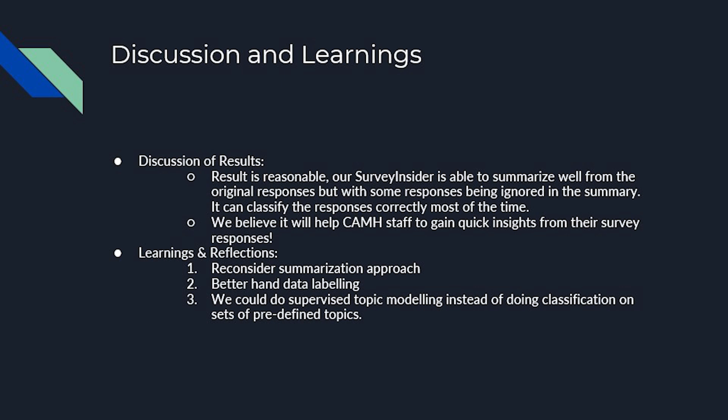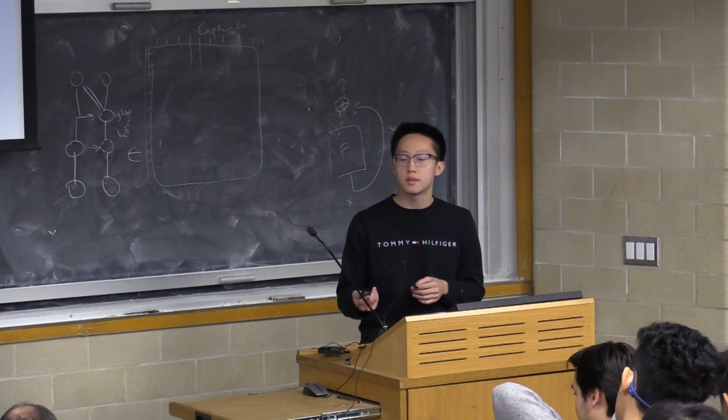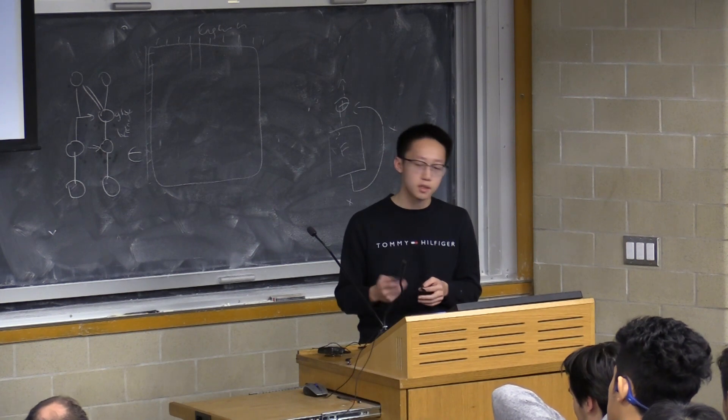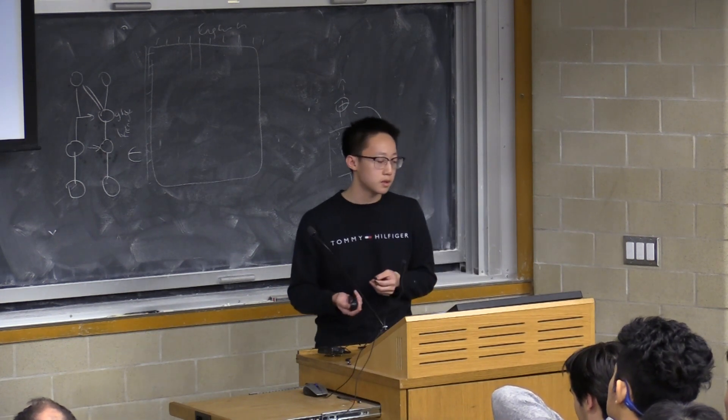Some reflections include the summarization approach: inside this project we use summarization to get rid of duplicate and irrelevant responses, but this has caused some loss in information from the original responses. Other reflections include better handling through unsupervised topic modeling instead of classification, because classification requires pre-labeled classes, while topic modeling can extract topics directly from the original responses.